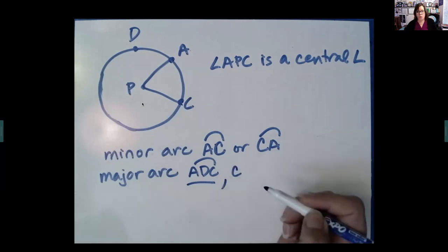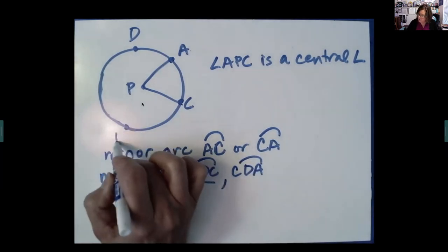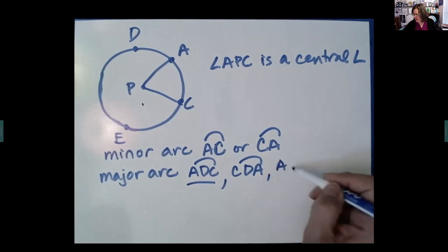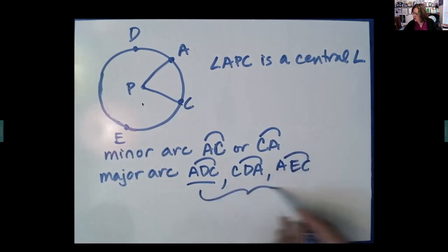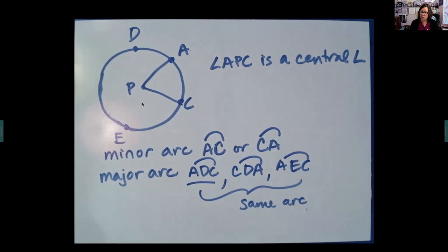It doesn't matter which endpoint we start at, so we could start at C, go through D, and all the way around to A. It also doesn't matter which interior point we use — start at A, go through E, end at C. These all name the same arc. If you have an arc named with two letters, you know it's minor. If named with three letters, it probably is major, but it might be minor — there are situations where we might name a minor arc with three letters for clarity.